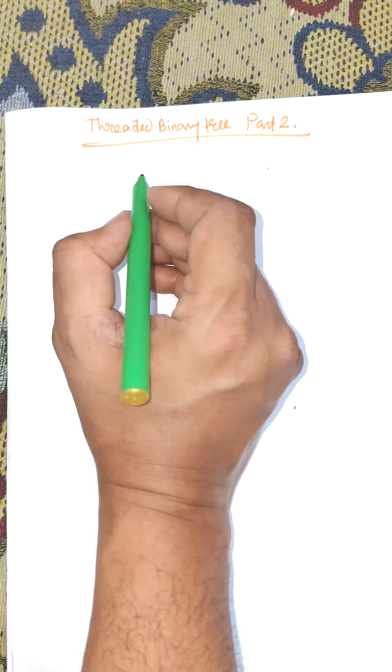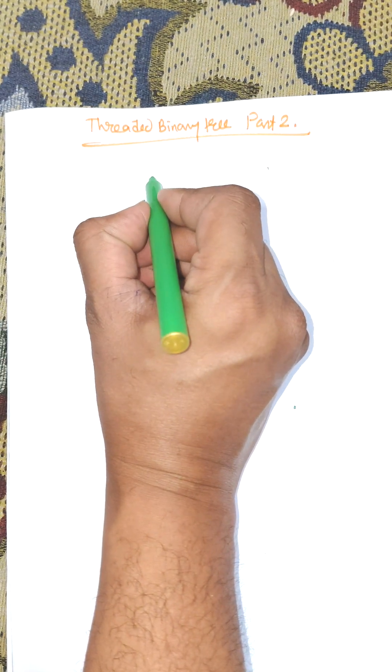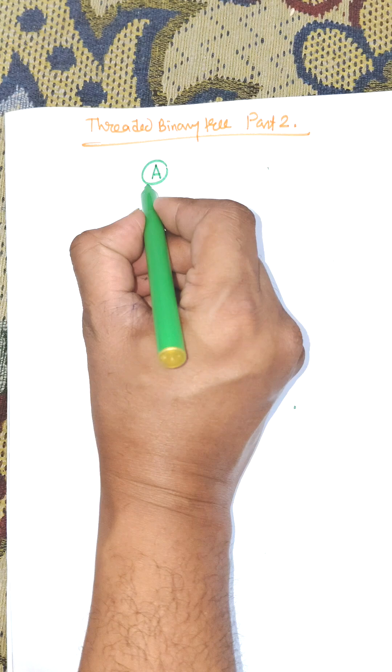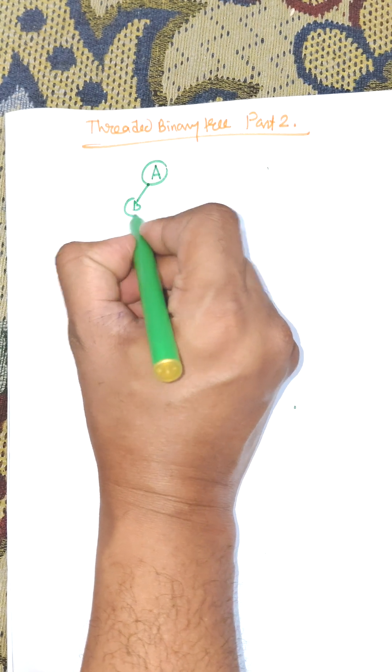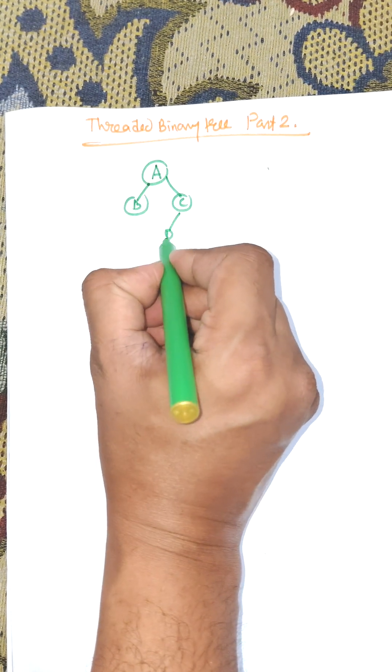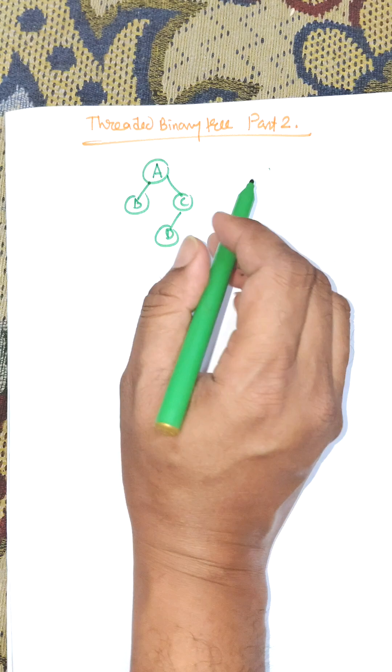Threaded binary tree part 2. In threaded binary trees, there is memory wastage due to null pointers. This wastage can be removed using special links known as threads.